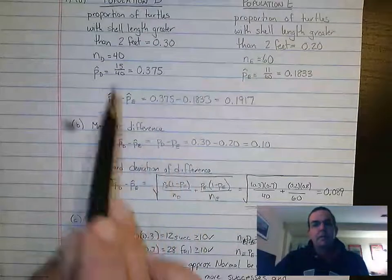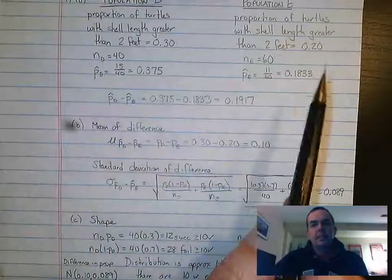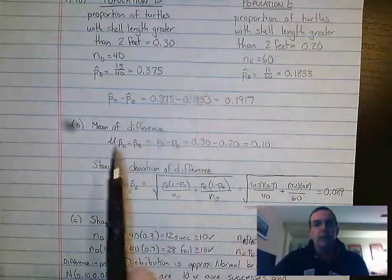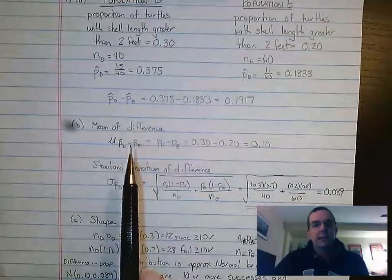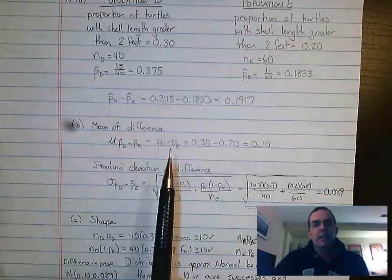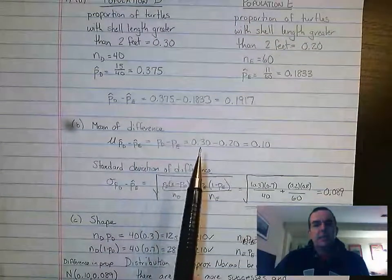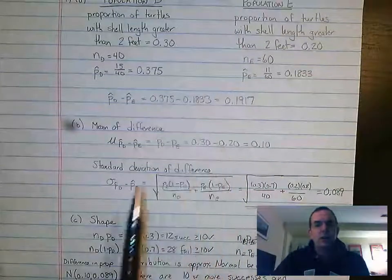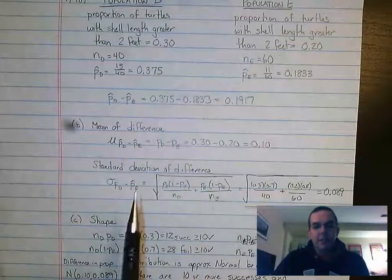In this case, the original 30% and 20%, not the sample but the parameter. So we do μ of p̂d minus p̂e, which is just pd minus pe: 0.3 minus 0.2 equals 0.1. Again, that subtraction is your work. Then it asks you to do standard deviation.